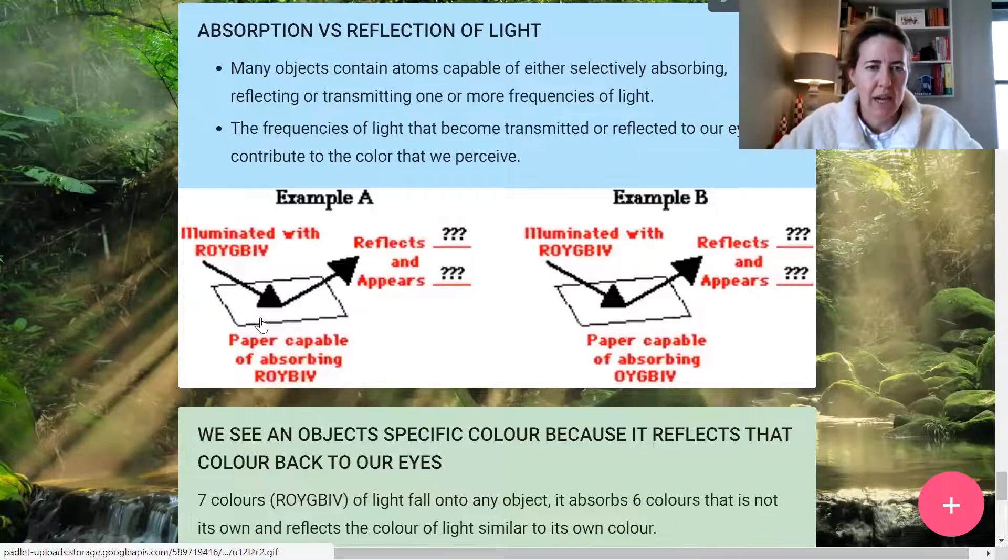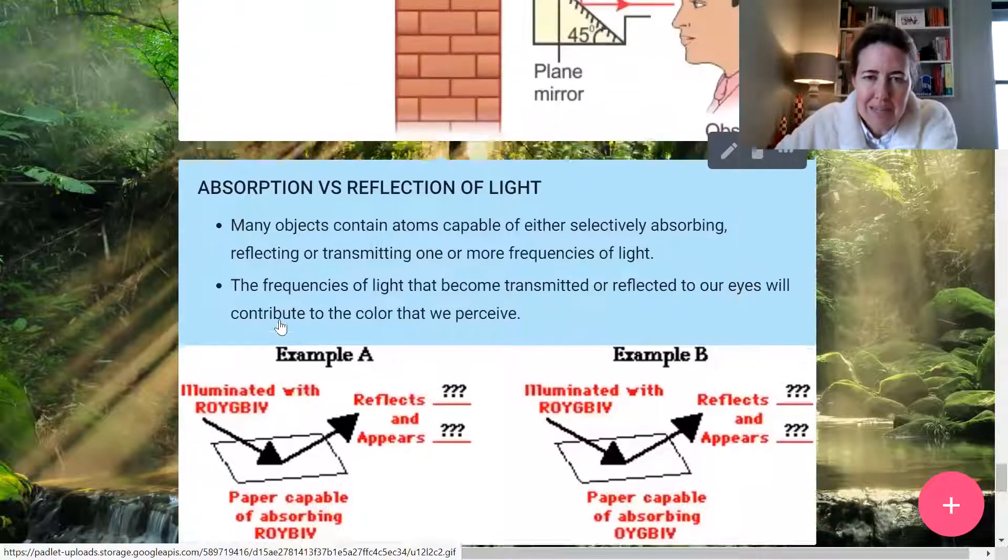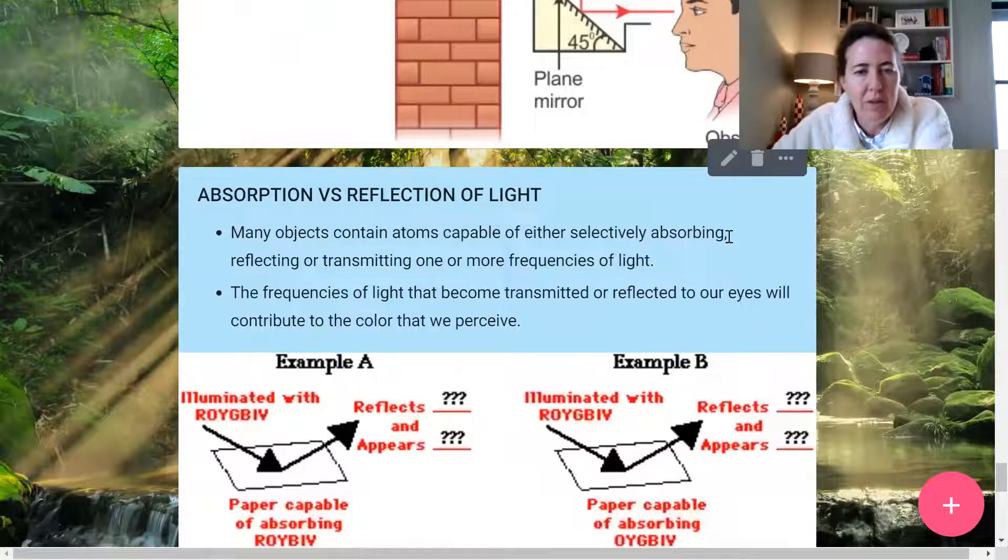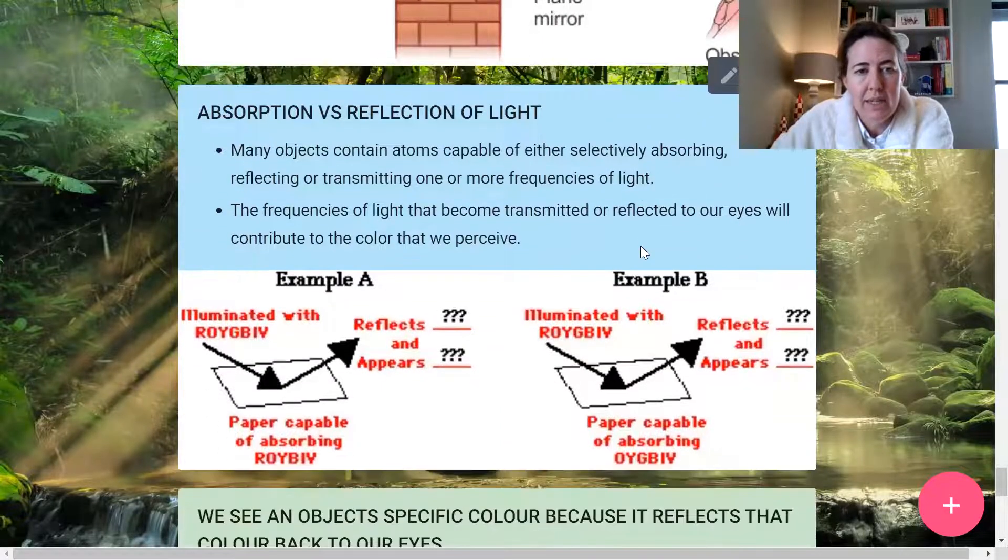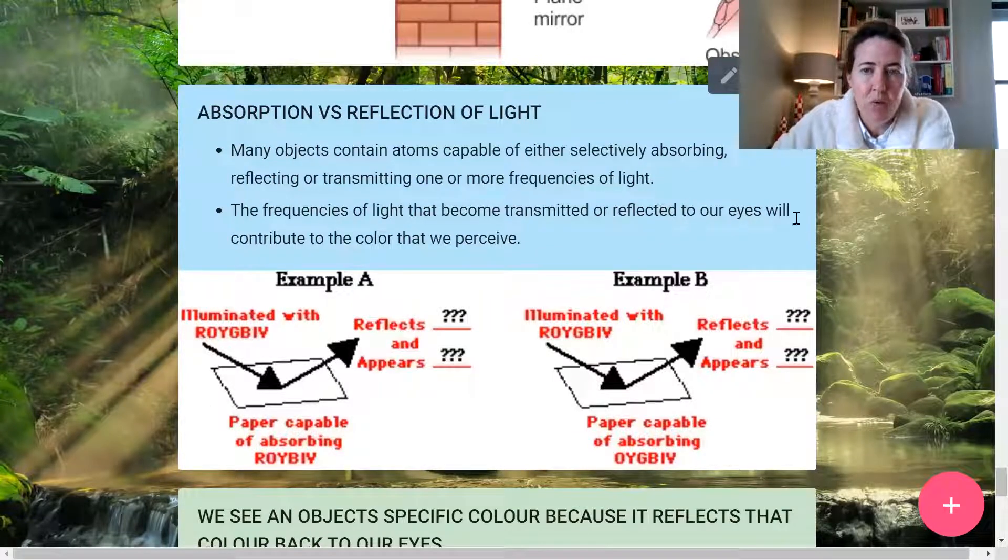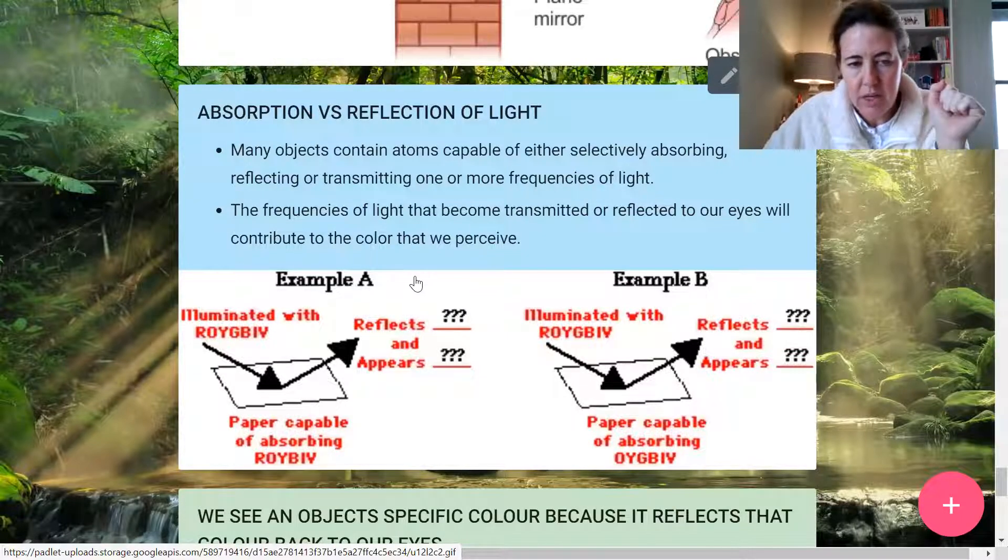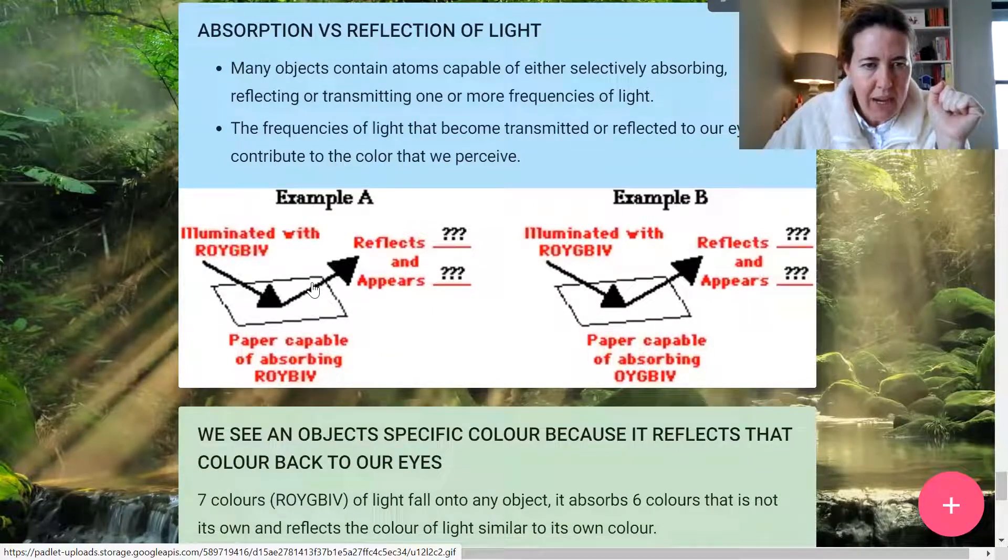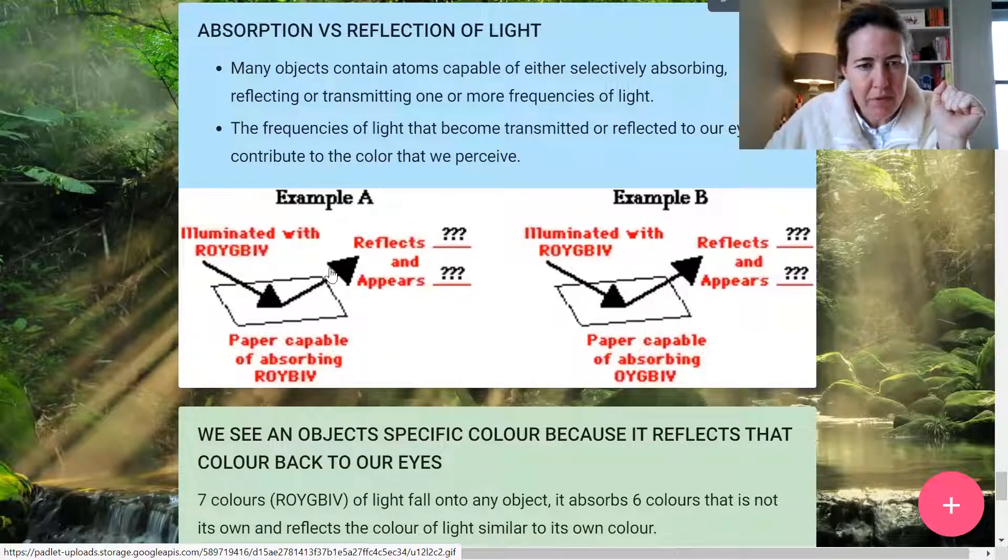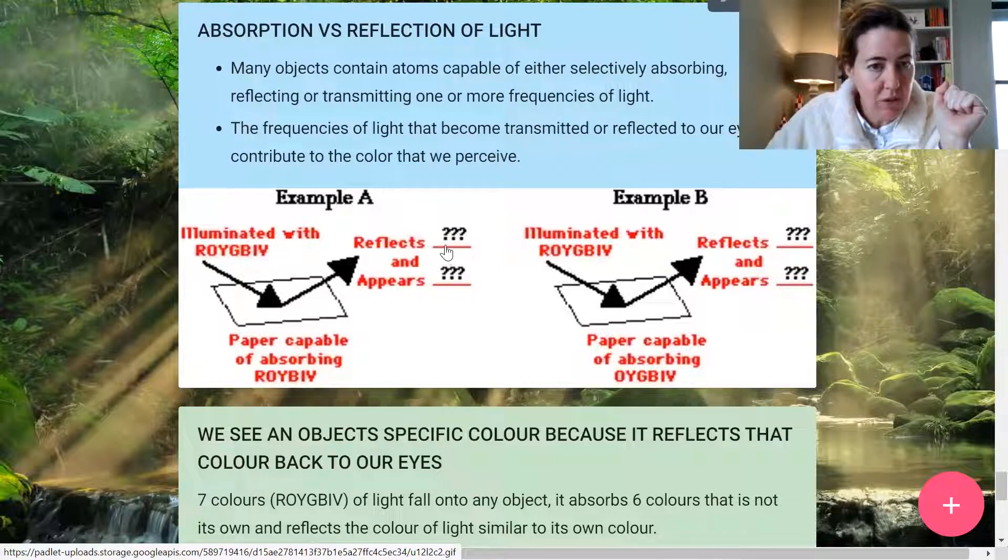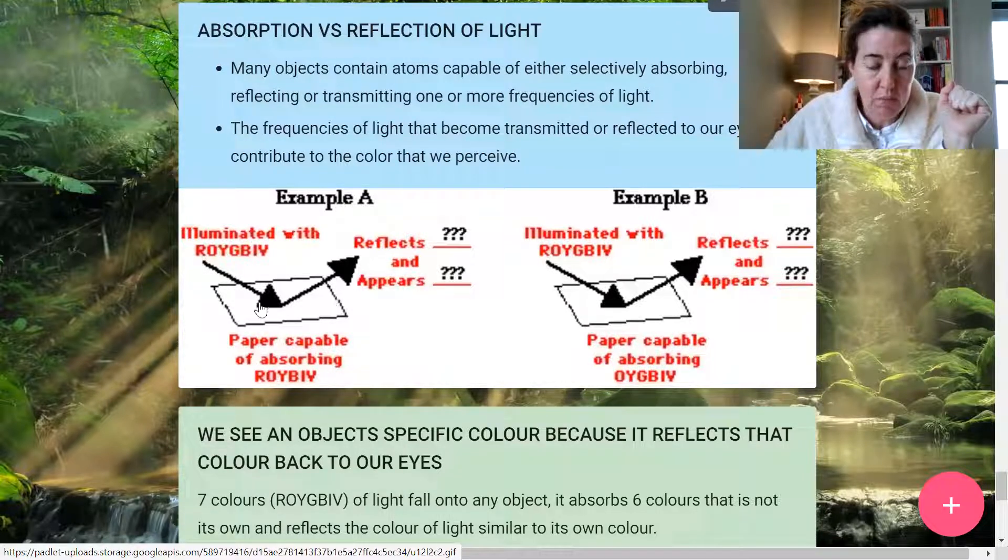Absorption versus reflection of light. So many objects contain atoms capable of either selectively absorbing, reflecting or transmitting one or more frequency of light. The frequencies of light that become transmitted or reflected to our eyes will contribute to the color that we perceive and see that object to be. So if you have a piece of paper, for example, we don't know the color of it. The question is, can you tell the color of this paper? It gets illuminated with white light that contains all the colors of the rainbow. Roy orange, red, orange, yellow, green, blue, indigo and violet.